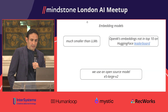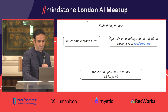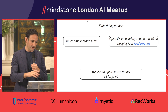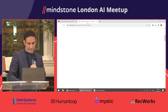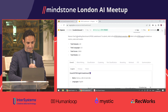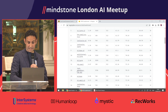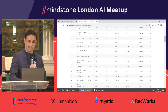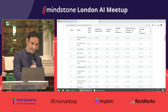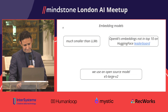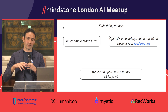Embedding models are much smaller than large language models. OpenAI has its own embedding models, and there is a leaderboard on Hugging Face for embedding benchmarks. OpenAI's embeddings are number 13, and most of the top ones are open source. The one we are using is e5-large-v2, which is number five on the leaderboard and works amazingly well. The lesson here is that the model is small and open source and you can get a lot of value out of it.